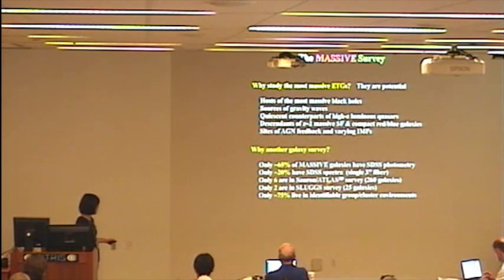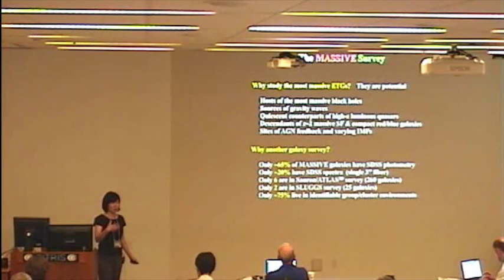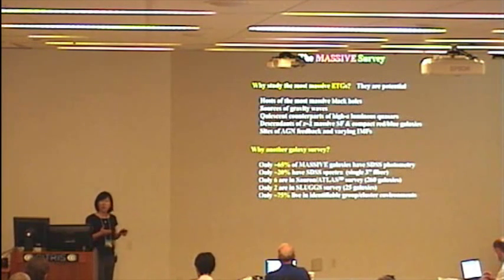And compared to Atlas 3D, there are only six overlapping galaxies because we are targeting the very, very massive end. So our volume is much bigger. And with slugs, there are only two of our galaxies that are in slugs. And our galaxies, in our papers we presented more environmental studies. You may think the most massive galaxies live in the most massive clusters. Sure enough, Virgo, Coma, Perseus, their BCGs are in our sample. But in fact, most of these are not in well-known rich clusters. Some of them are in fossil groups. Some seem to be in fairly isolated environments.